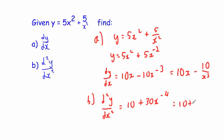Likewise here you could have 10 plus 30, and you could bring the x⁻⁴ to the denominator to give you x⁴. So that's it.